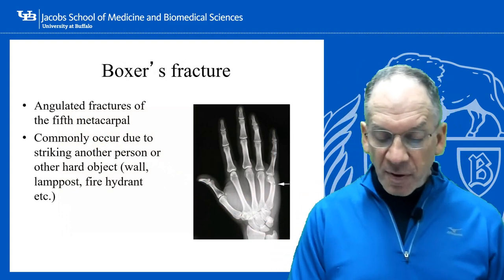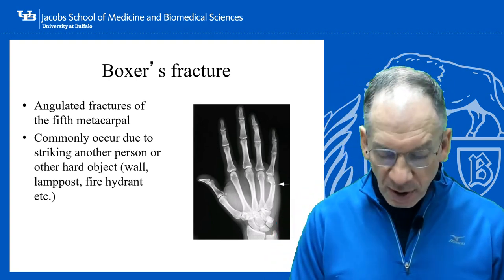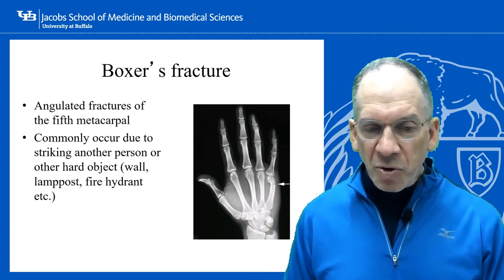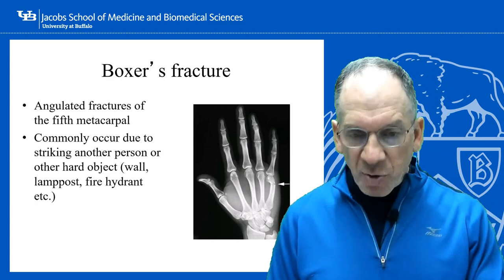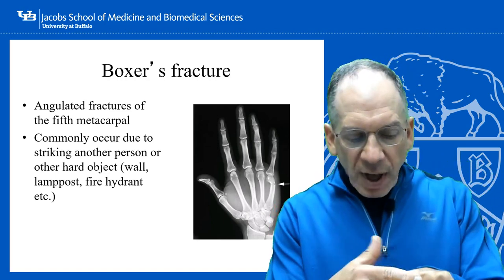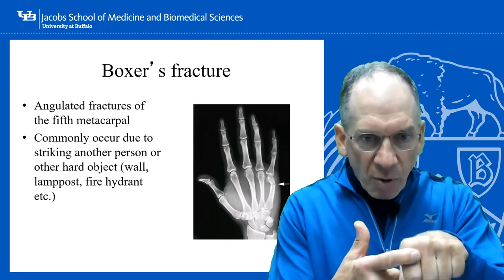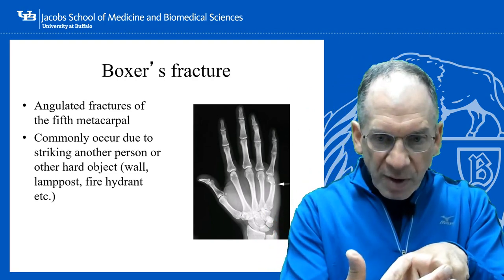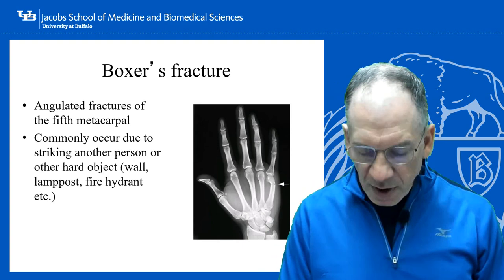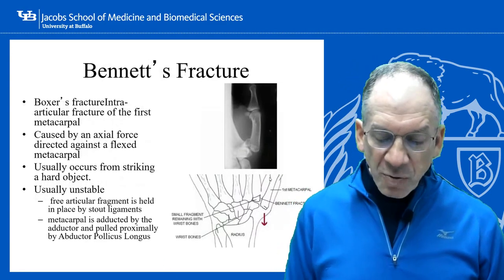Boxer's fracture is an angular fracture of the fifth metacarpal, commonly caused by striking a person or an inanimate object — walls, lamp posts, refrigerators, fire hydrants. The term 'boxer' is a misnomer because boxers know how to punch correctly. This is usually from a wild swing applying an oblique force to the bone. Metacarpals are very strong when loaded axially, but an oblique force causes fracture, producing the classical distally angulated fifth metacarpal deformity.